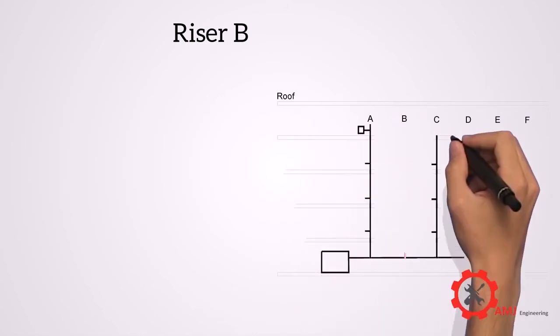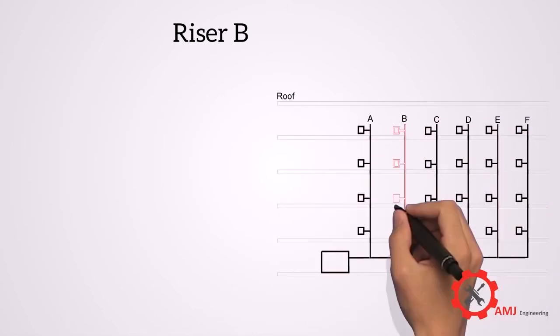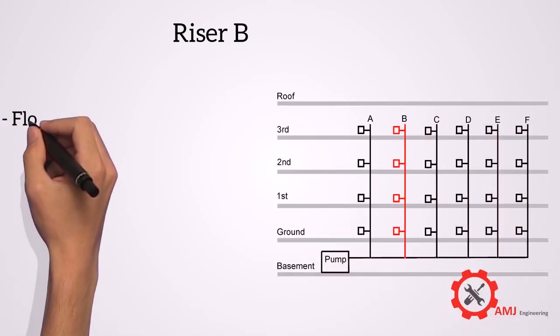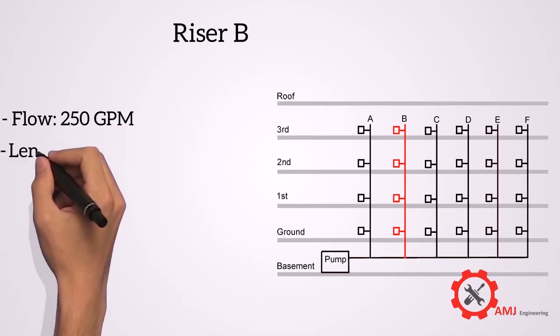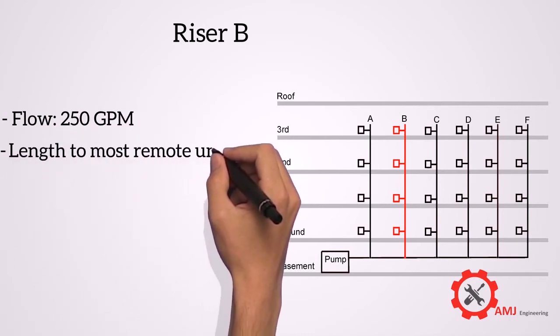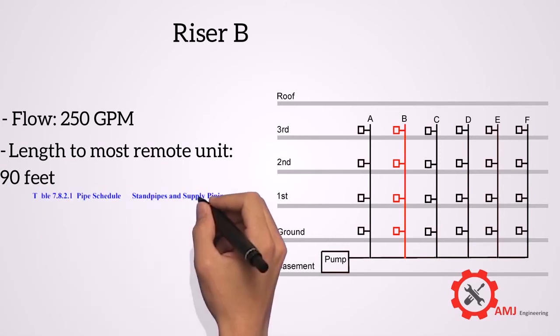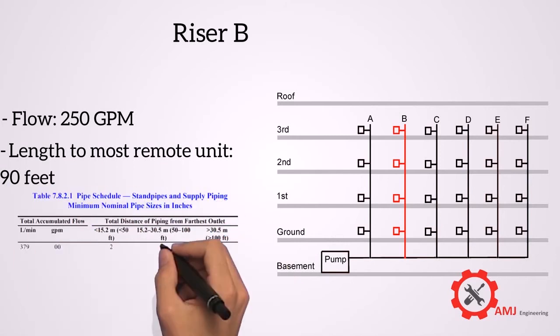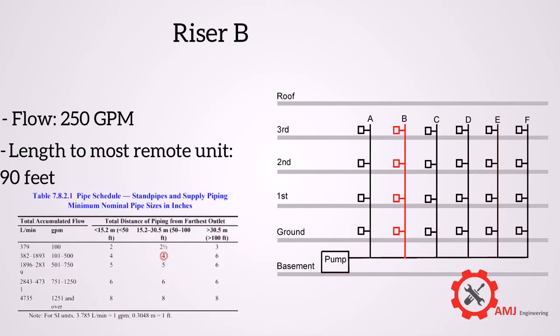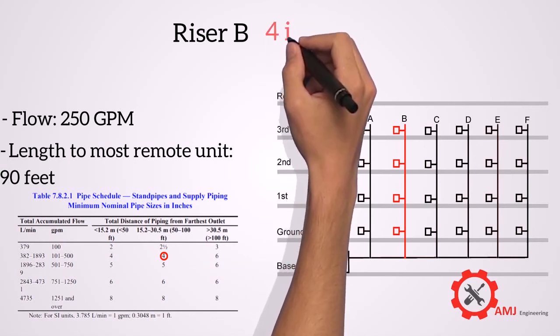For riser B, the flow is 250 GPM, the length to most remote outlet on riser B is 90 feet. So from the table the required pipe size is 4 inches.